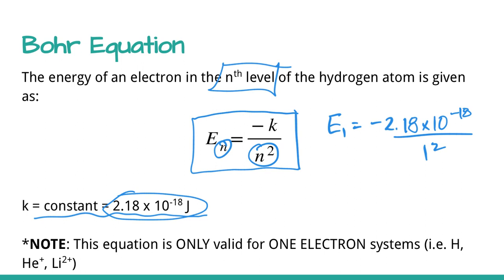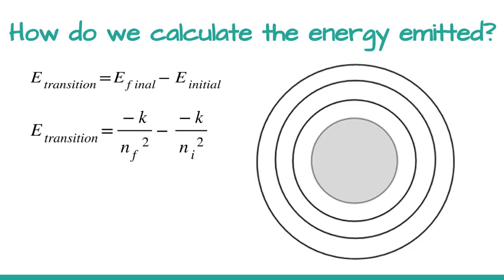Really important to note, this equation only works for one electron systems. It only works for hydrogen, although it can work for helium plus ion or lithium two plus ion, anything that just has a single electron. The only calculations you're going to see using this equation are ones related to hydrogen itself.